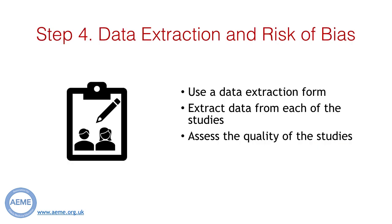Step four is to extract the data from the studies and assess the risk of bias. It is helpful to create a data extraction form that outlines the data you want to extract from each study, such as the number of participants, the location of the study, and findings from the study. It is also important to assess the quality of each study and the impact this may have on their findings — for example, did the researchers know which treatment dementia patients had received when assessing cognitive function? Again, it is good practice for two reviewers to independently extract the data in order to aid accuracy.